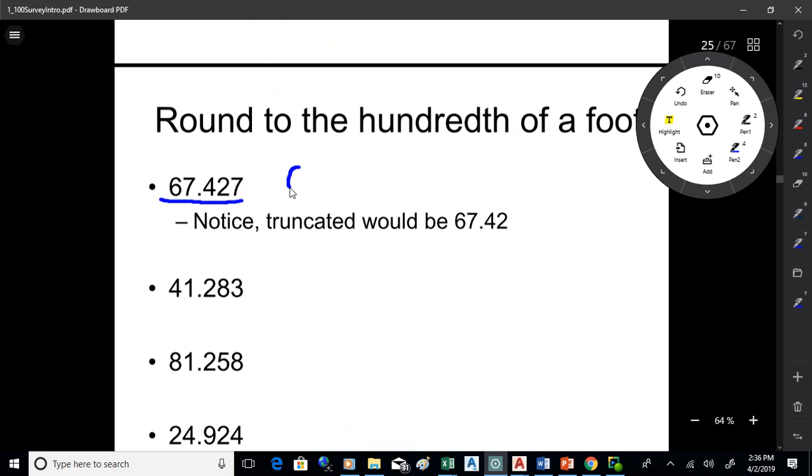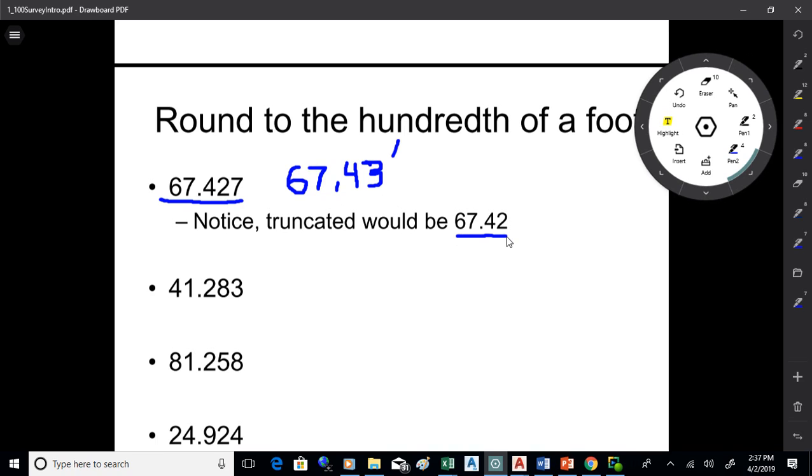So what are we going to round that to? If we're going to the hundredth, which is a common survey precision there. 63.43, right? If you truncate, that would be 67.42. That may not seem like a bunch of difference there, but surveyors are going to get mad about that. They're not going to like that at all if you truncate. They measure stuff for a living. That's what they do.